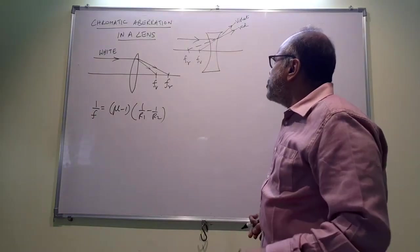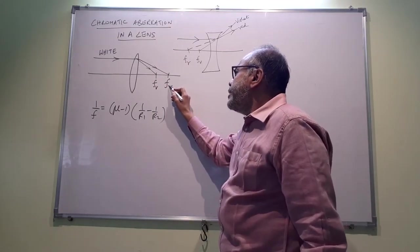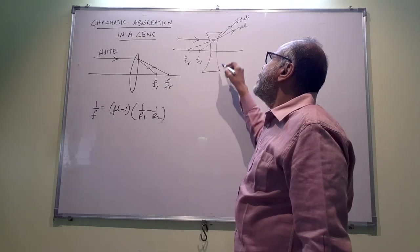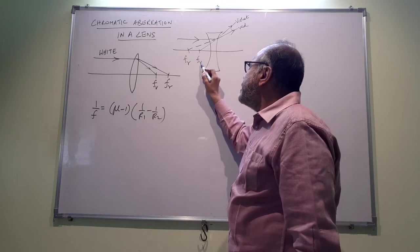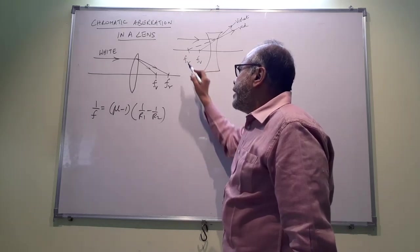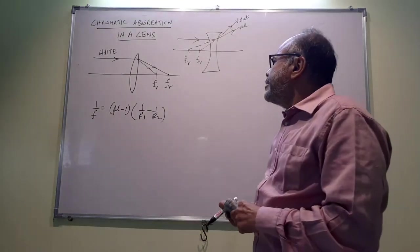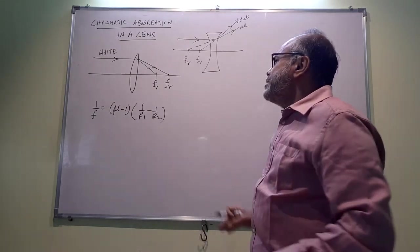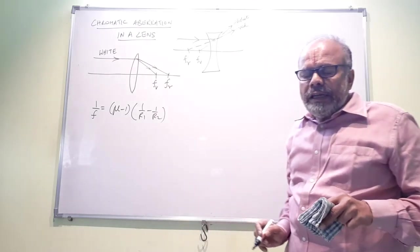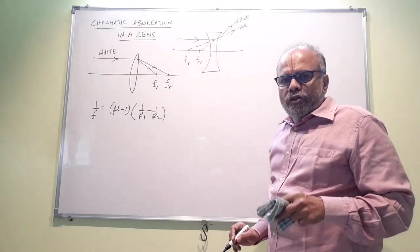Now we notice one thing: here on the principal axis, the focus of red is to the right of the focus of violet, whereas for a concave lens, the focus of violet is towards the right of the focus of red. So this gives us a hint that probably if you combine both these lenses, we should be able to focus the red light and the violet light at the same point and eliminate the chromatic aberration.